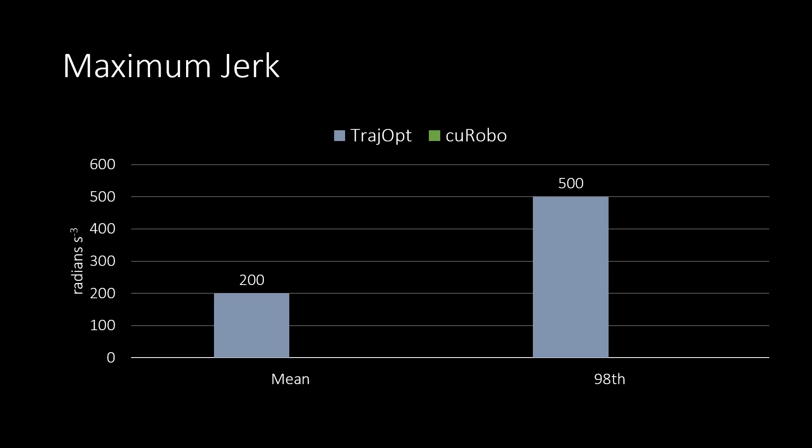Kurobo also minimizes jerk with the squared L2 cost, which enables generation of trajectories that are four times lower jerk when compared to TrajOpt.